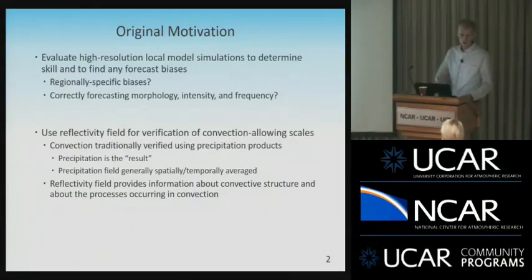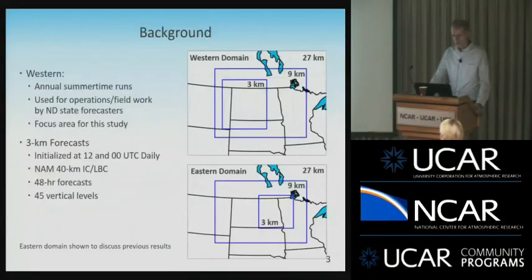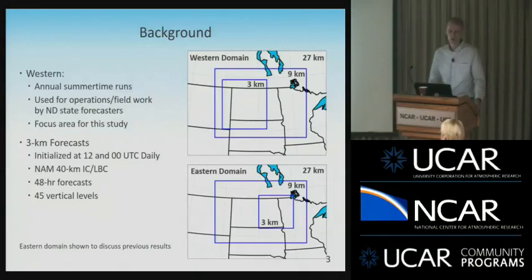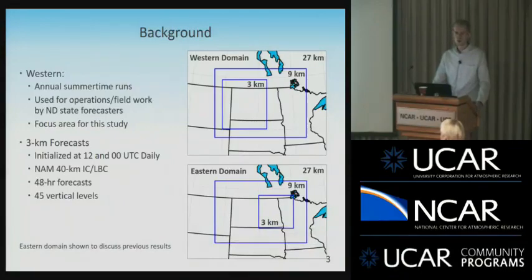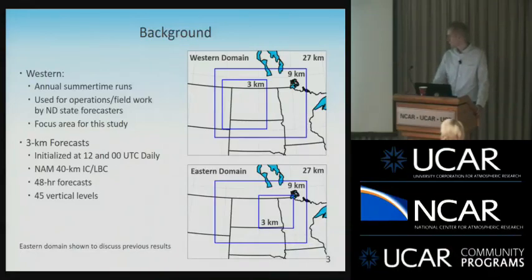The top right image is the western domain and the bottom right image is the eastern domain. They're both pretty small domains — not a massive CONUS study — but a good domain size for sensitivity analysis if you have bulk data. The western domain had runs starting from 2012 across four months in summer, June through September, used for operations and field work by state forecasters. That's primarily the domain I'll be focusing on — the three-kilometer domain — although I'll mention the eastern domain because that's where a lot of the previous results came to motivate the study.